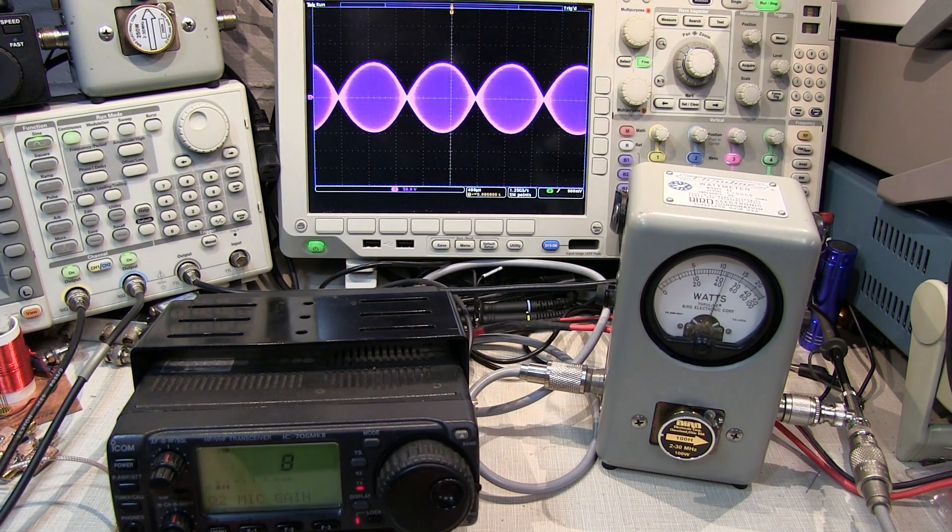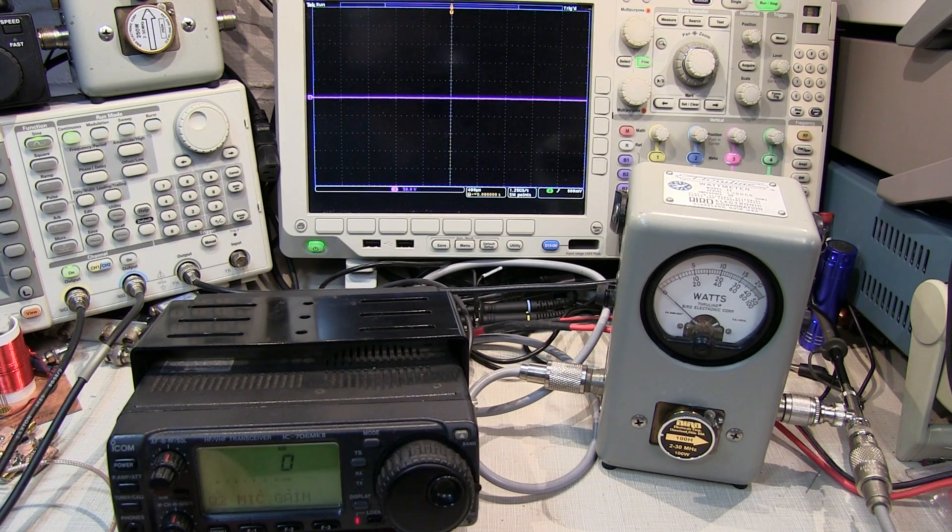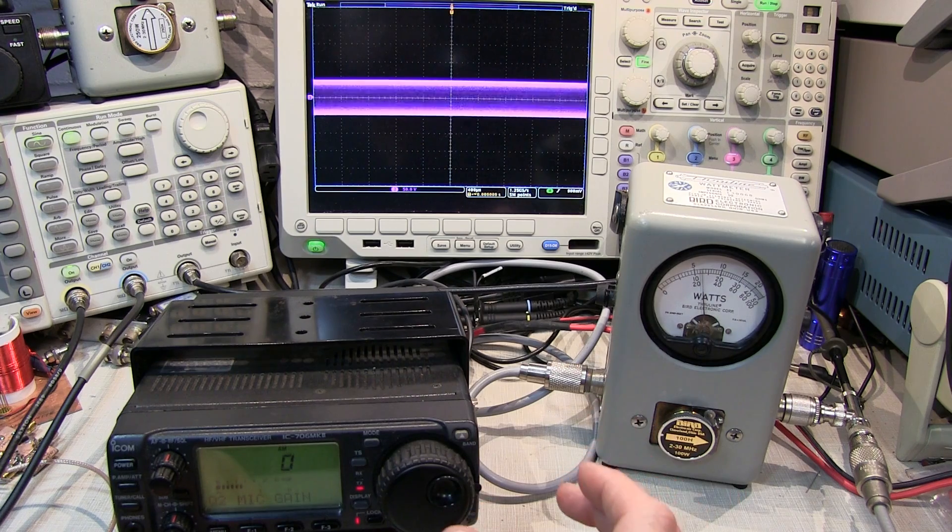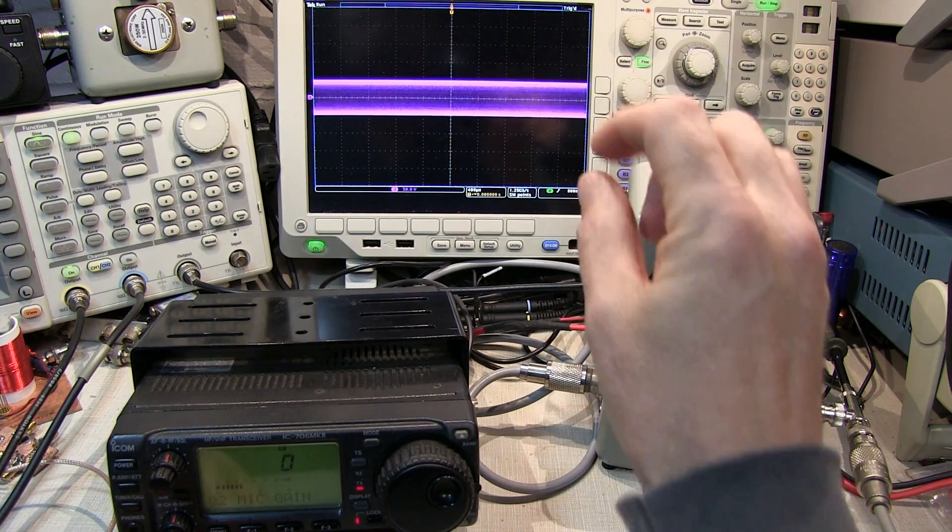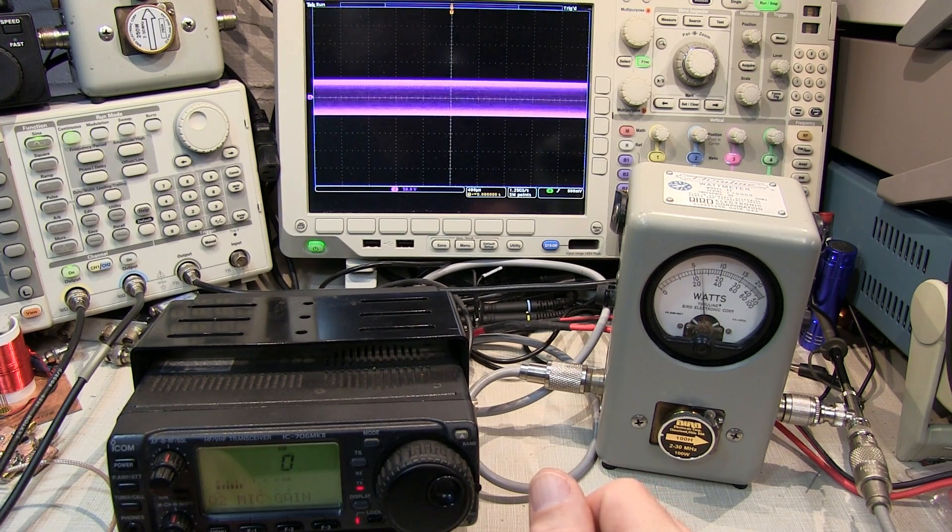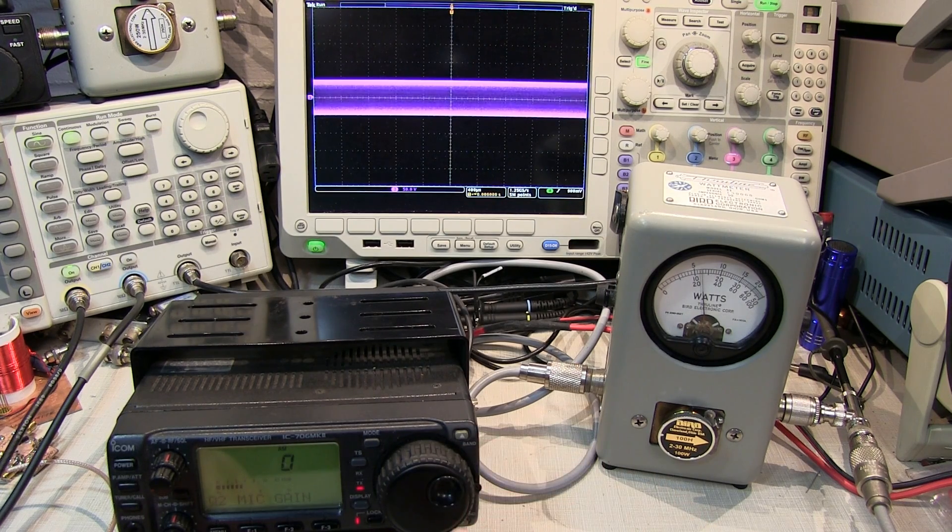So let's look at the same thing with AM. Now for AM, without any audio input, and we key it up, we essentially get our RF envelope of the carrier, which is ideally half the amplitude as we mentioned, or one quarter of the power of the full peak-to-peak envelope.